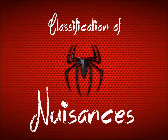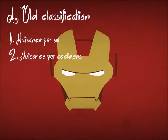Now we will classify the different kinds of nuisance, so as not to make your academic life way more complicated than your love life. The first classification is the old classification: it could be a nuisance per se — something that is always a nuisance — or nuisance per accidens, a nuisance only because of the location or other circumstances.